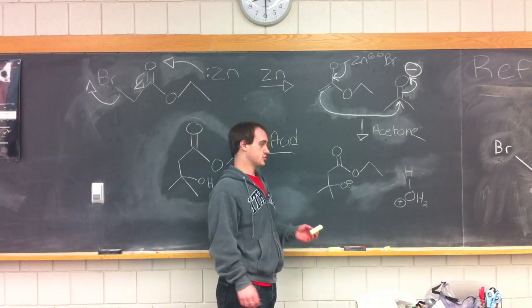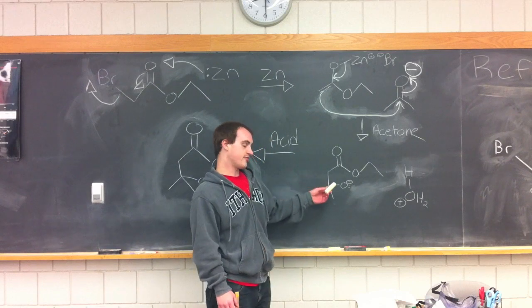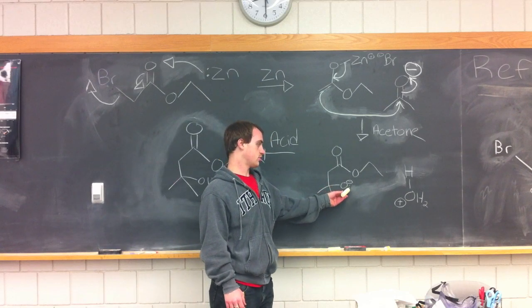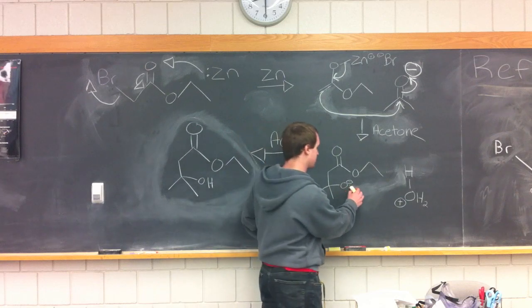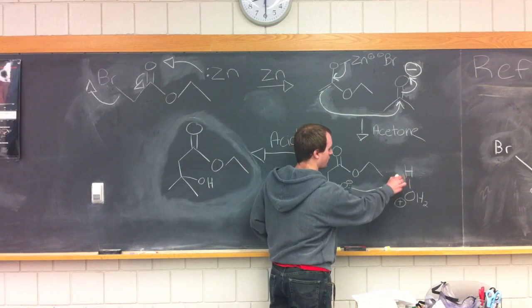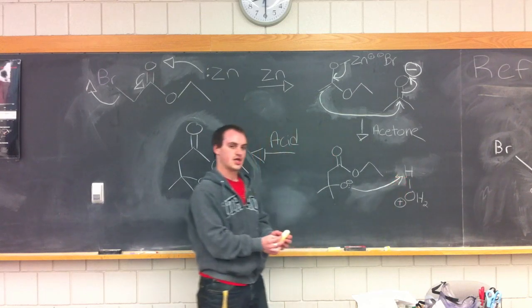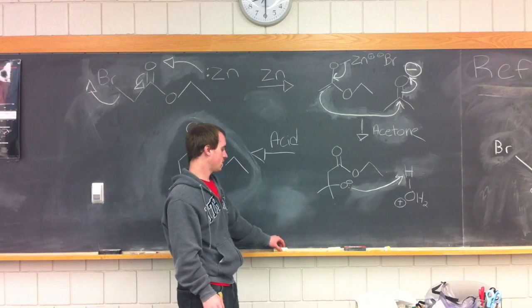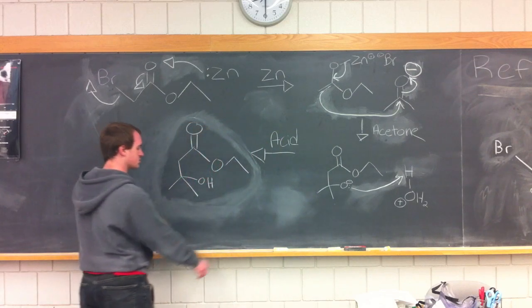Once both molecules are joined, we now have a negative oxygen with an extra lone pair. Using acid, we can take that lone pair on the oxygen and take the extra hydrogen off of water, making our final product seen here.